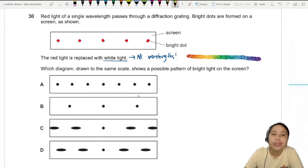So what is a possible pattern of bright light on the screen? You're gonna have all the colors. The middle line is still what we call the zero order, otherwise known as n equals zero. So that's where all the wavelengths will be, and it's gonna be white color.